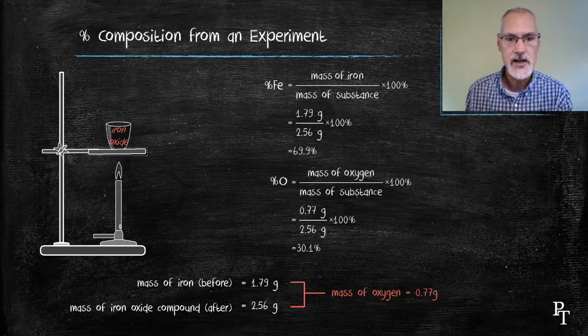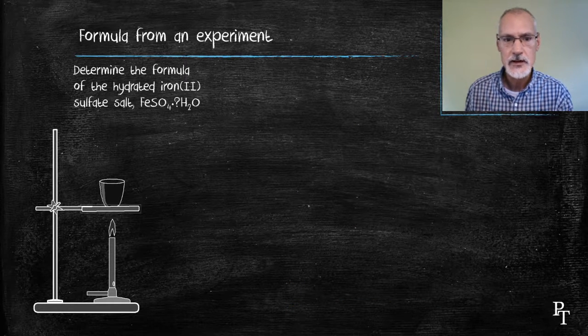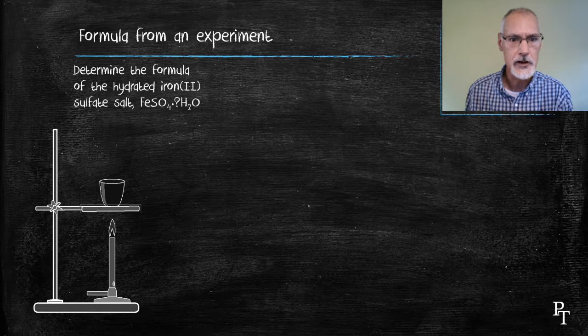Let's look at also obtaining a formula from an experiment. In this one, I'm going to try to determine what the number of water molecules that are associated with a hydrate. Iron sulfate hydrate can have seven water molecules to it, but it also has others. I'll see what I have in this case.